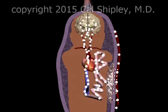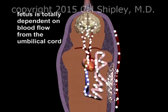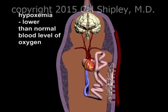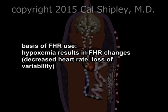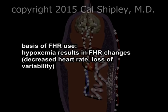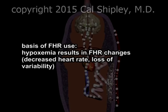Thus, the fetus is completely dependent upon the mother for nutrition and cannot survive without a steady flow of blood through the umbilical cord. Significant impairments or interruptions in blood flow to the fetus will therefore result in lower-than-normal blood levels of oxygen, also known as hypoxemia. The usefulness of fetal heart rate monitoring during labor is based on the fact that significant or prolonged hypoxemia will result in FHR pattern changes, particularly decreased heart rate, also known as bradycardia, and loss of fetal heart rate variability.